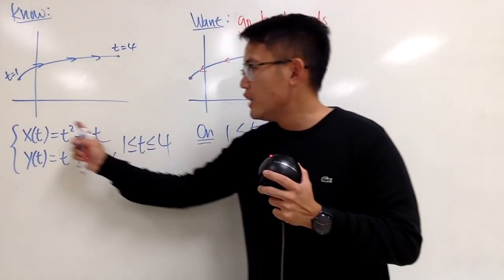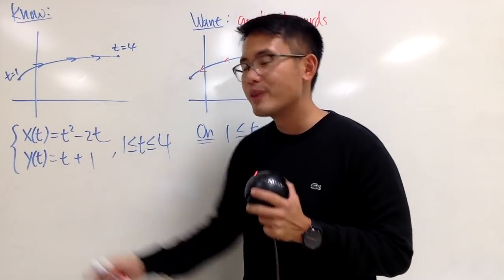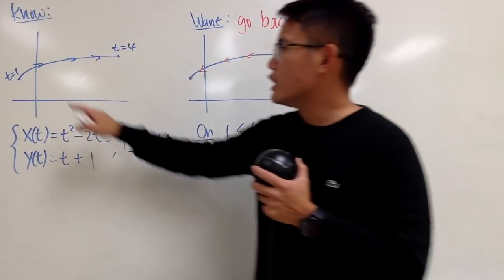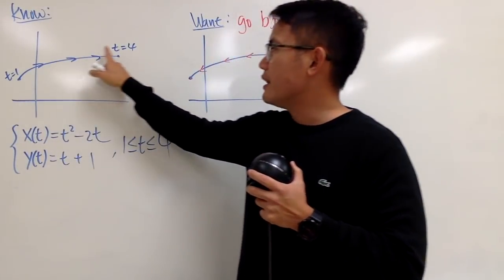So, last time we were seeing it, if we graph these parametric equations, and let's just say we want to talk about the interval from 1 to 4. In that case, we start right here, and we end it right here.